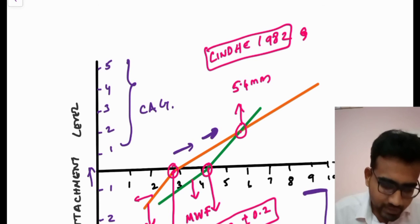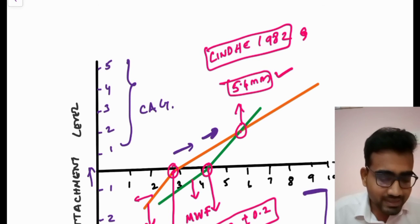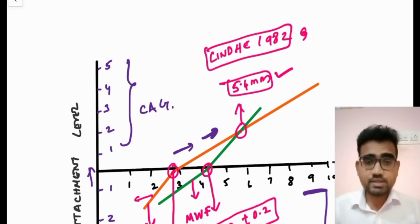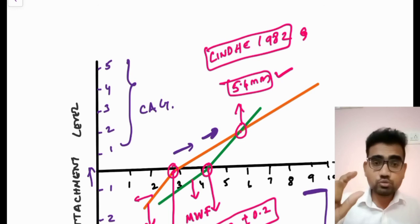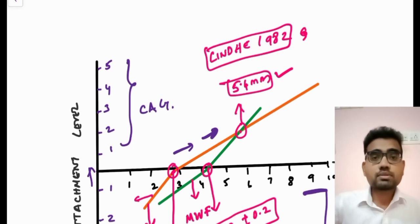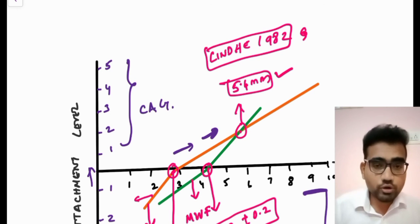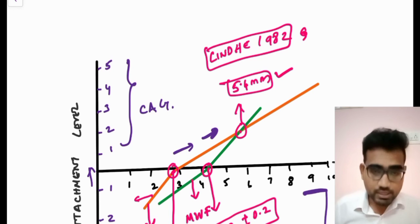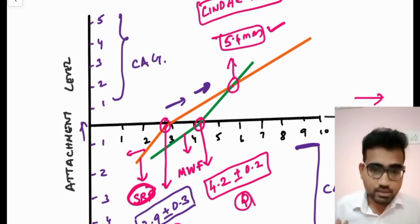This is the concept of critical probing depth. It might be a little tricky but if you watch it again it is very easy. For a given value: if you do the treatment above that value the treatment outcome is going to be good; if you do the treatment below that value, it is going to result in clinical attachment loss. It is as simple as that.